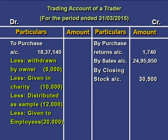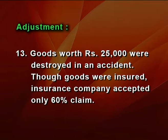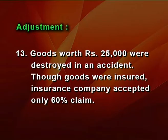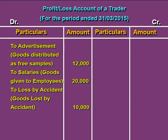The next adjustment: goods worth Rs 25,000 were destroyed in an accident. The goods were insured, but the insurance company accepted only 60 percent of the claim. When goods are destroyed for an abnormal reason it is an abnormal loss. The insurance company accepts only 60%, meaning there is 40% actual loss to the firm: 40% of Rs 25,000 is Rs 10,000. This Rs 10,000 is reported as an indirect loss on the profit or loss account.